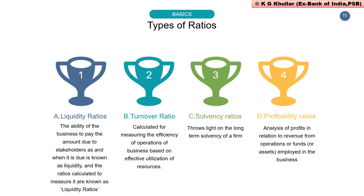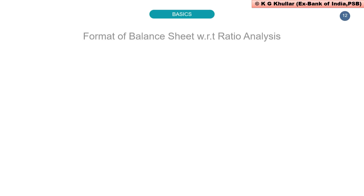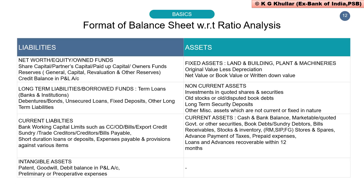Before starting with all four types of ratios, let us understand the format of the balance sheet with respect to ratio analysis. Since I receive countless queries about students being confused in placing different heads under assets or liabilities — and frankly, if one can't classify any head given in the question under asset or liability, it's really hard to solve any question of ratio analysis — please pause the video and note down this important table, and you will never get confused again.